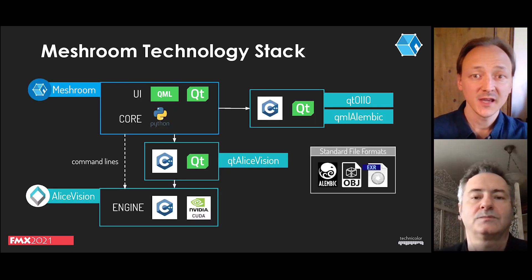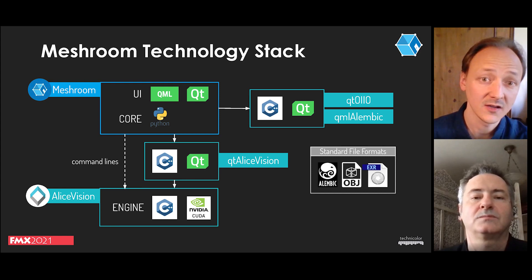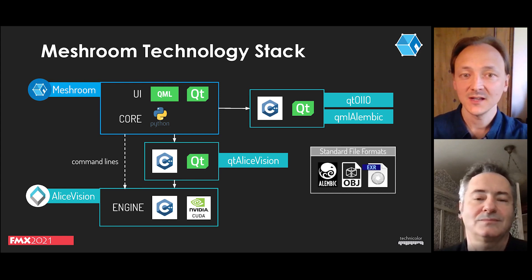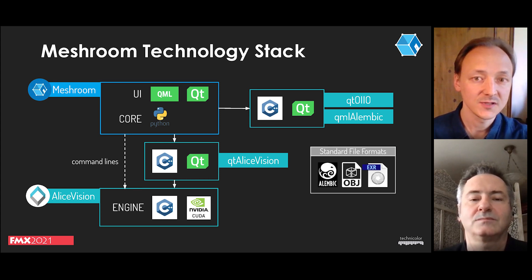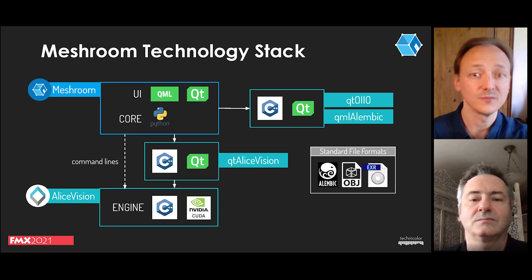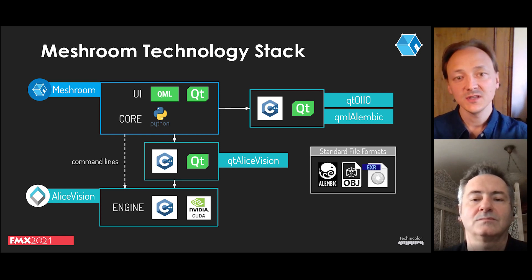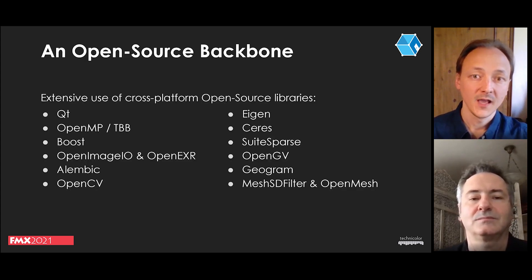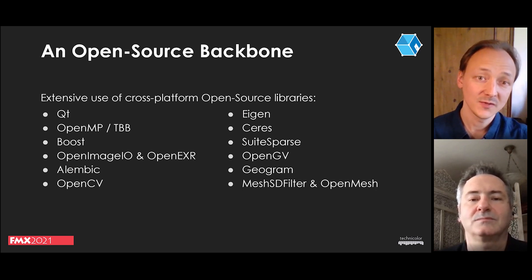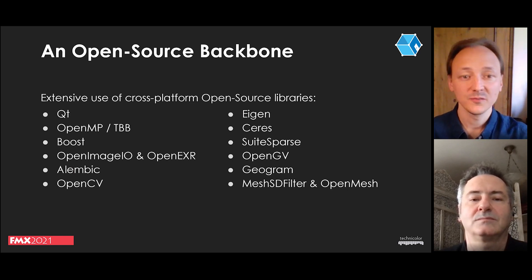Regarding the technical aspects, here is the technology stack under the hood. Meshroom is a graphical user interface written in Python and QML. AliceVision is the core computer vision framework that does the processing in C++ and CUDA. There are also several C++ plugins to load data in Meshroom. We rely as much as possible on standard open source file formats like OpenEXR, OBJ, and Alembic. We also rely on many open source libraries developed by the VFX community as well as mathematical and computer vision communities.